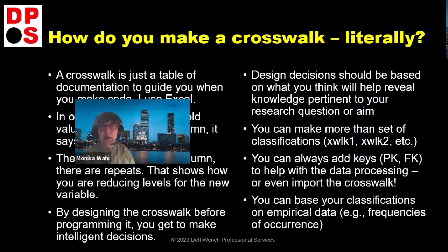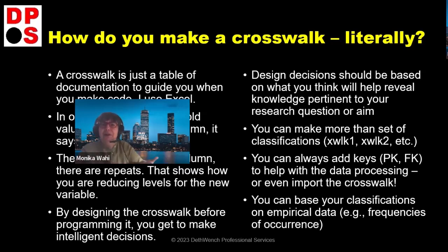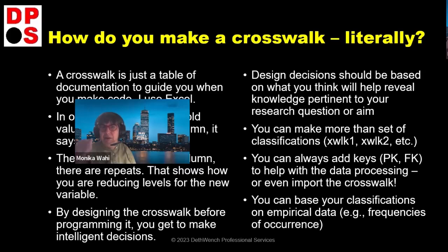Humans are generally smarter than machines — except for specific domains like chess. Design decisions should be based on what you think will help reveal knowledge pertinent to your research question. You can make more than one set of classifications. For example, with 50 US states, you could make a variable classifying whether the state was north or south of the Mason-Dixon line, and another classifying east or west of the Mississippi River. You can make as many crosswalk variables as you want — they're free.